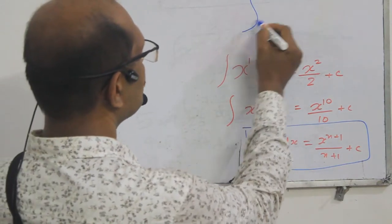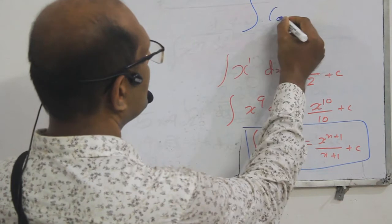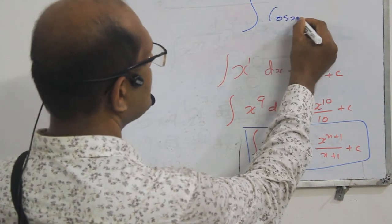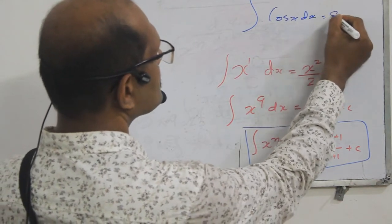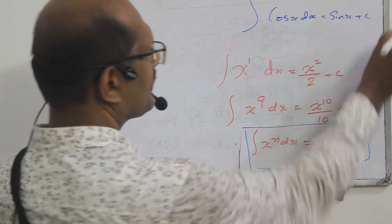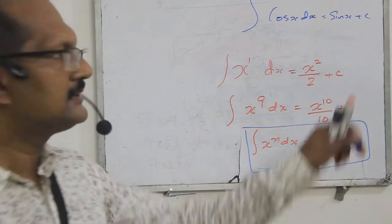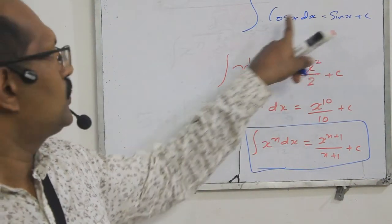And then we write the cosine. We write the cosine, and then we draw. Sin x is the derivative of cos x.